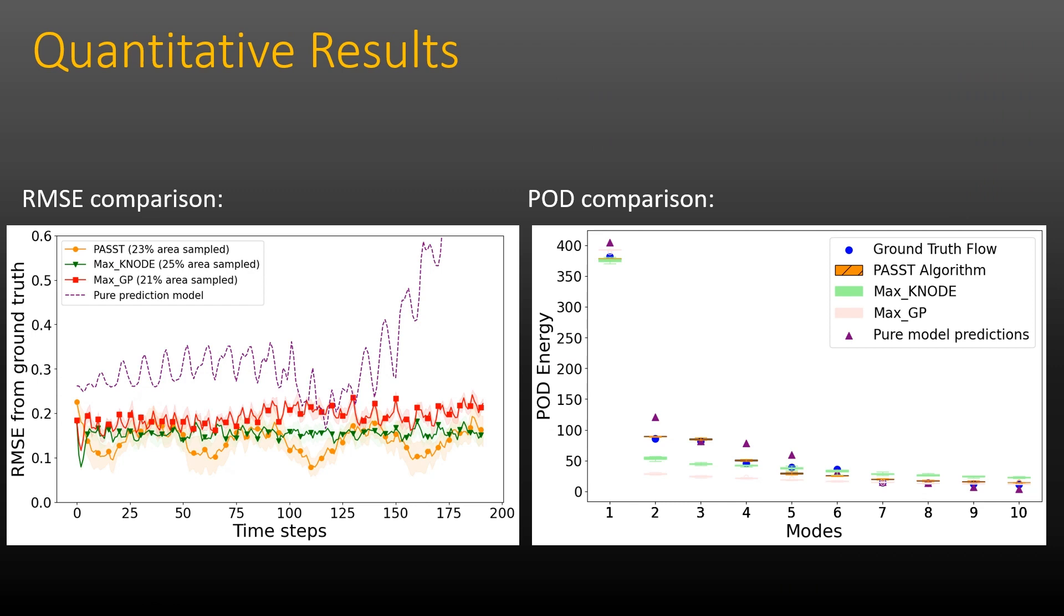Even though the RMSE is slightly higher, our algorithm is able to persistently monitor the fluid process with a bounded error as presented in these plots. Once again, the baseline methods fail to capture both the spatial distribution and the energy distribution of the fluid process being monitored.